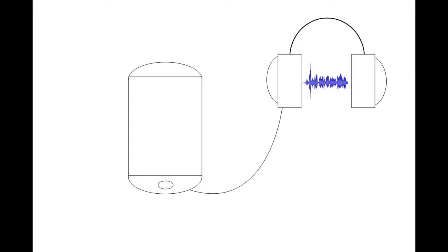The idea behind all this is actually very simple. The signal that comes out from your audio jack is just an analog signal that usually is transferred into sound using the speakers. This means that we have a piece of hardware that can create a signal with any form.